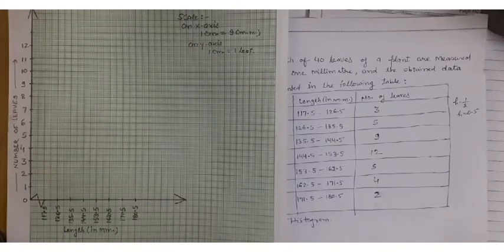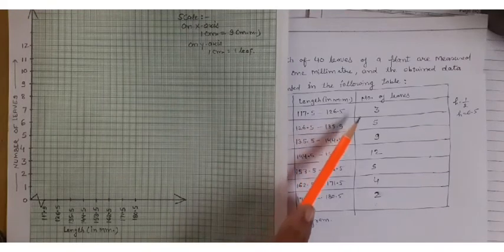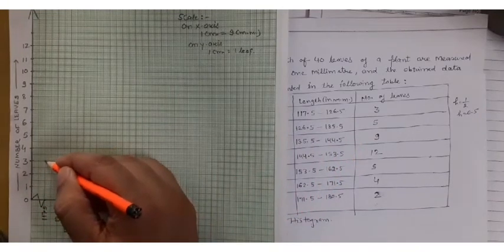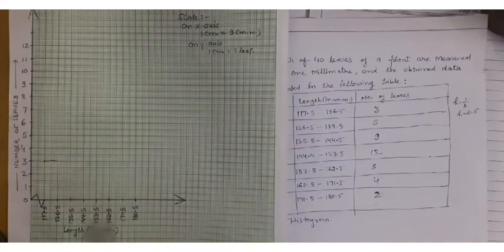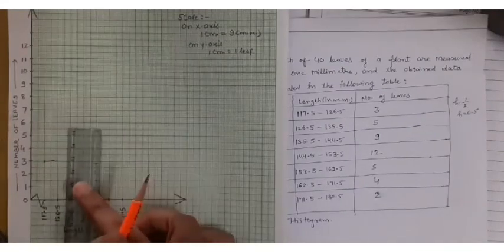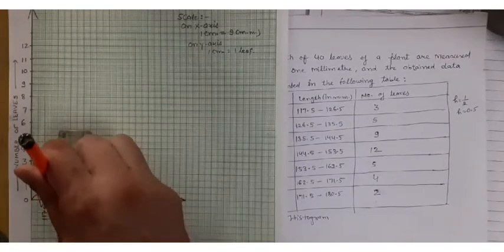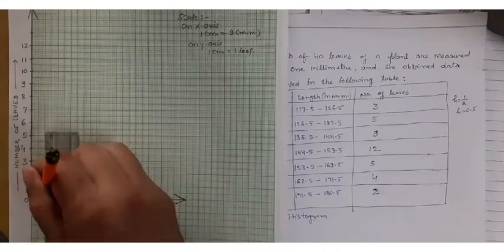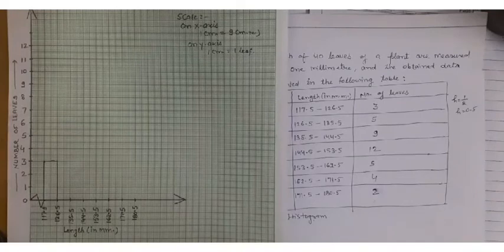Now see the first. What is given? 117.5 to 126.5, 3 leaves are here. So I have to make this 3 here. This 3 like this, and with help of scale, like we can manage easily. Like this. This is 3.